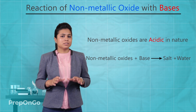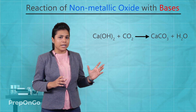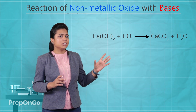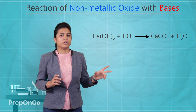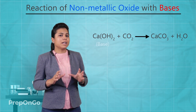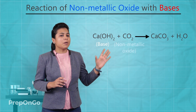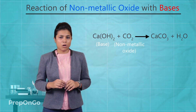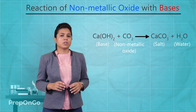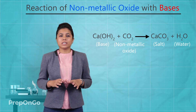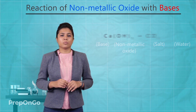Let's understand this by example. If we take calcium hydroxide reacting with carbon dioxide, we get calcium carbonate and water. We know that calcium hydroxide is a base, carbon dioxide is a non-metallic oxide, and calcium carbonate is a salt. So non-metallic oxides when reacted with bases give salt and water.